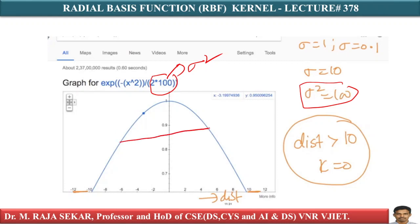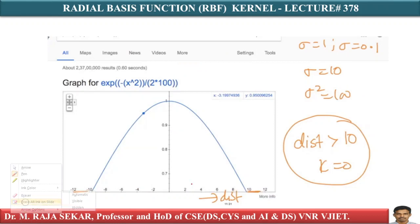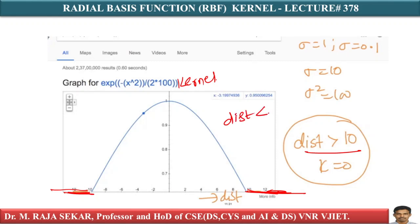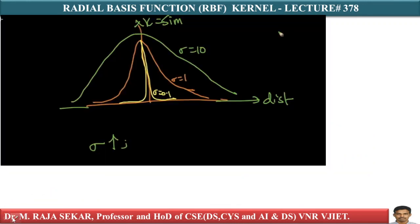If I plot sigma equal to 10, the width increases. Width increased means I can accommodate more number of points. If distance on the x-axis is greater than 10, after 10 the kernel value is zero. Less than minus 10 it is also zero. So if distance is greater than 10, kernel value is zero. We are taking distance on the x-axis and kernel — also called similarity — on the y-axis. This is the graph for sigma equal to 10, sigma equal to 1, and sigma equal to 0.1.